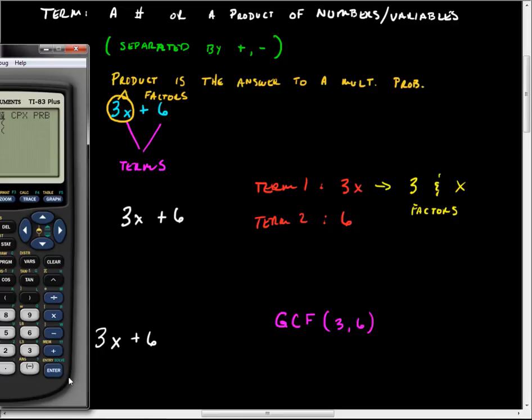It is also known as the greatest common factor. So, we can simply press GCD and we put in 3, 6, the comma is just above the 7, even for the 84. Close those parentheses and press Enter. Well, it says the greatest common factor of 3 and 6 is 3.